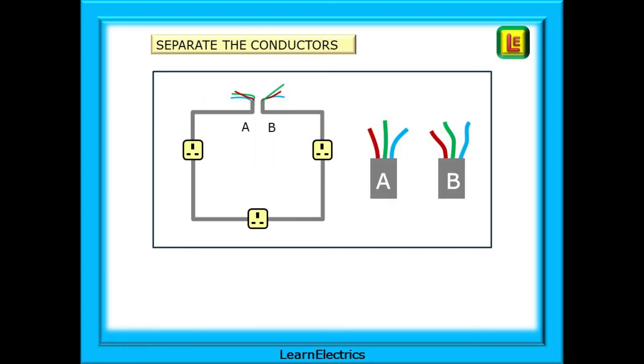At the consumer unit, we must separate the six conductors that make up the ring circuit. If it's twin and earth cable, we'll have an A cable and a B cable. If they are singles, we must find which three wires belong to one set, the A's, and which three to the other set, the B's. I then fasten them together as separate sets with a cable tie.